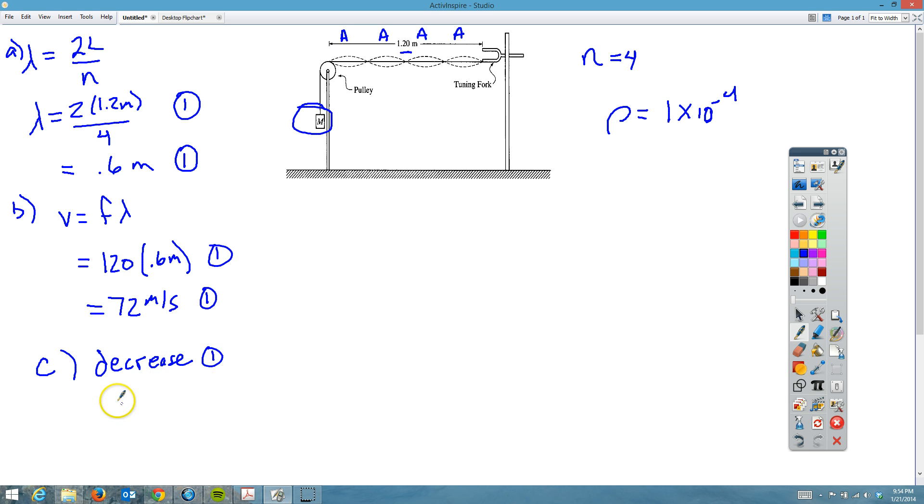You get a point for that, but you have to give two explanations or two statements. You need to say something like the wavelength must decrease for more loops, since frequency is constant. So the speed of the wave must decrease.